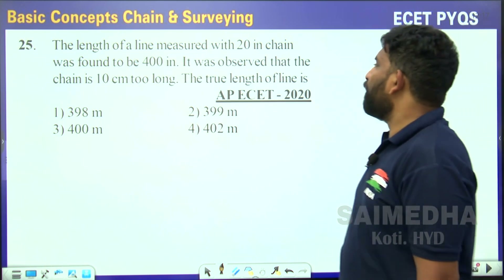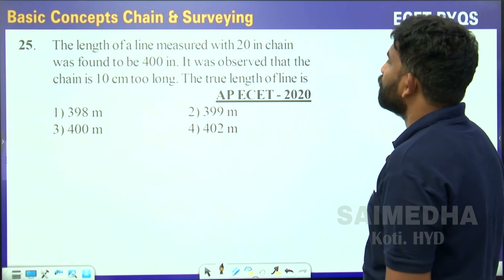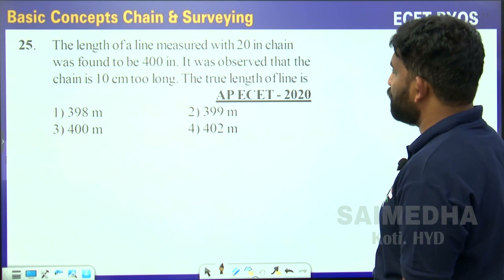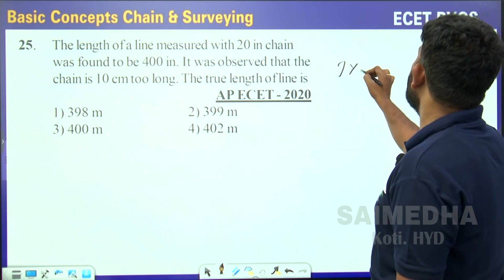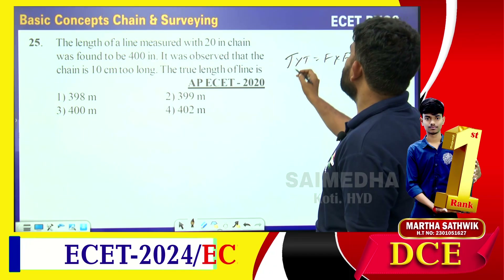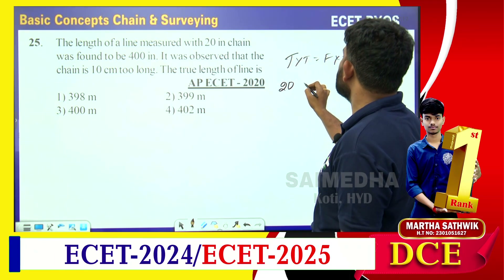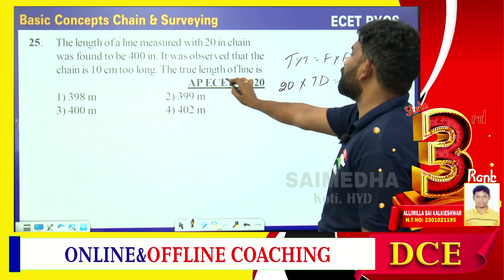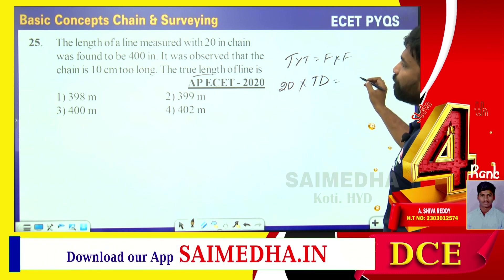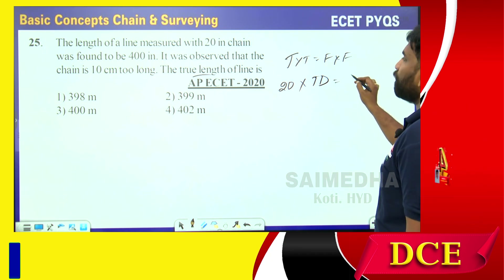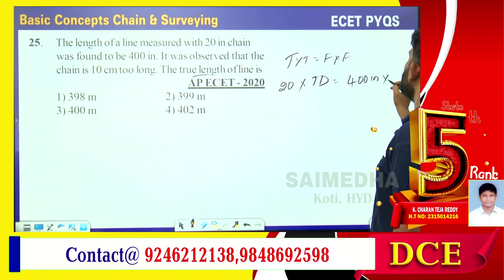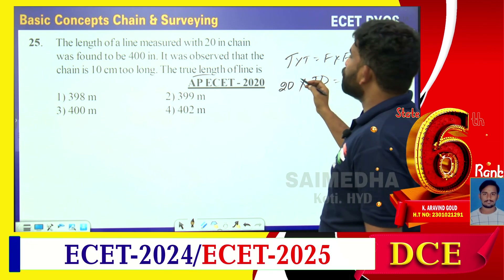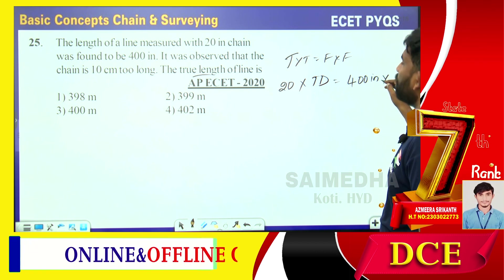The length of a line measured with a 20-meter chain was found to be 400 meters. It was observed that the chain is 10 centimeters too long. The true length of the line is? So using the relation: true length of chain × true distance = false length of chain × false distance.